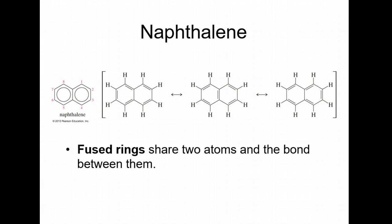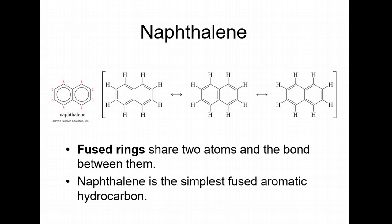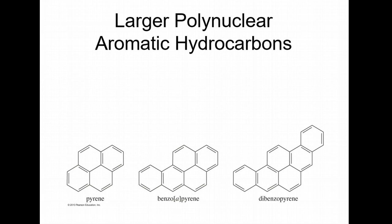Here's naphthalene showing you all of the kekulé structures. Fused rings share two atoms and the bond between them. Naphthalene is the simplest fused aromatic hydrocarbon. Larger polynuclear aromatics - you don't have to memorize these. Naphthalene and anthracene you should probably know, but all these other ones are more just for your interest. These are pretty cool looking compounds. They're found in tobacco smoke. By looking at them you can probably figure these probably are not things I should be consuming.